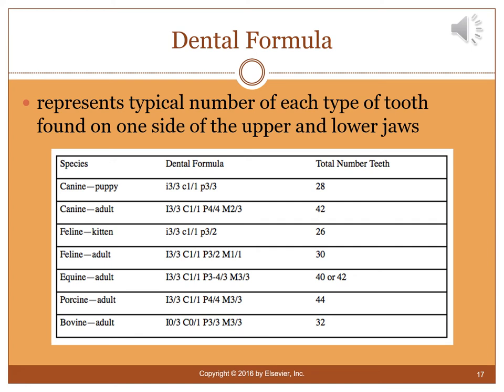The dental formula and total number of teeth must be memorized. A canine puppy has 28 teeth; an adult dog has 42. You need to know which teeth a puppy has that an adult doesn't, and the same for kittens versus adult cats. For equine, porcine, and bovine, you just need to know the total number of teeth.